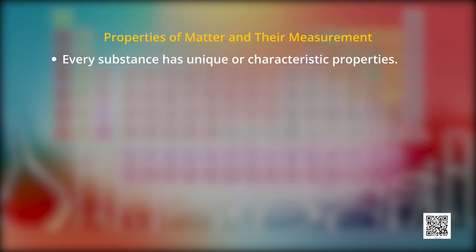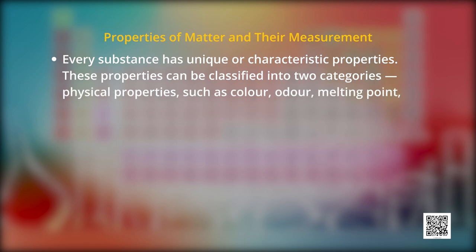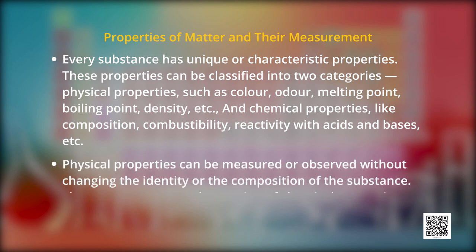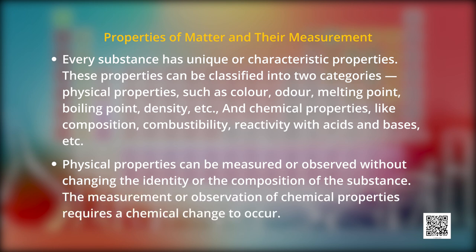Every substance has unique or characteristic properties. These properties can be classified into two categories: physical properties such as color, odor, melting point, boiling point, density, and chemical properties like composition, combustibility, reactivity with acids and bases. Physical properties can be measured or observed without changing the identity or composition of the substance. The measurement or observation of chemical properties requires a chemical change to occur. Now, we will learn about the measurement of physical properties.